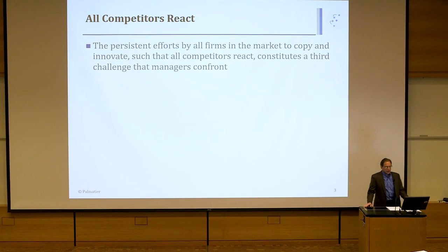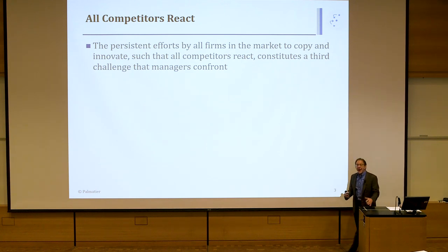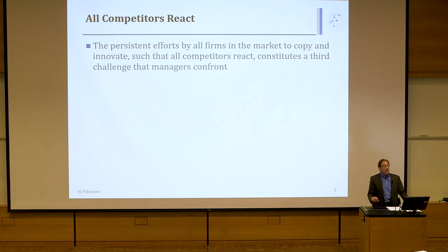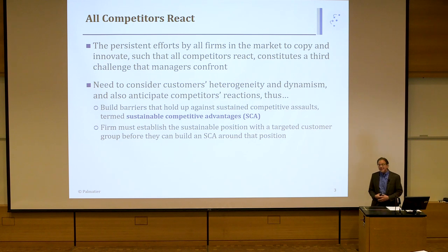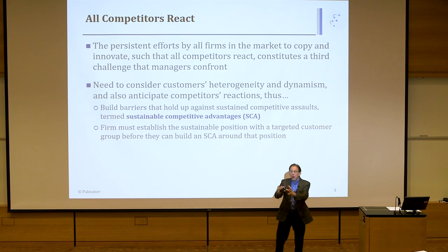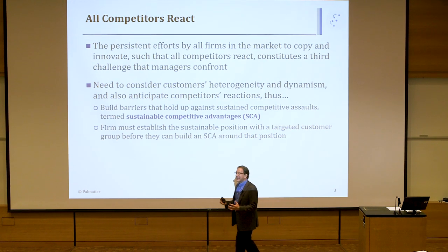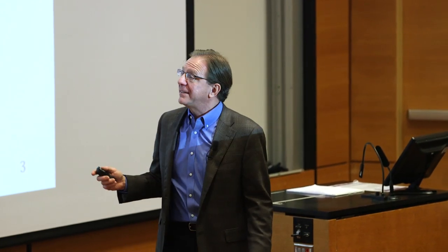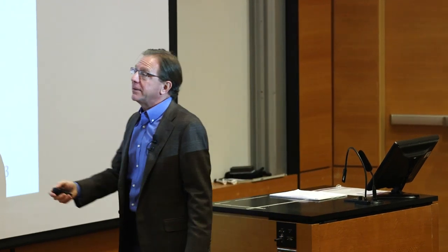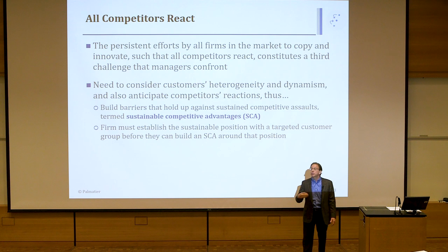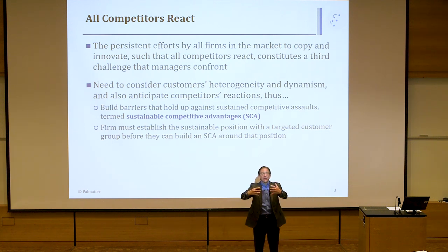All competitors react. All firms are out there putting in effort, time, resources, money, to copy and to innovate, to come out with a way to better service customers. Very often, those customers they go after will be the same customers you're trying to protect. This idea that they're all out there going after your customers is this third principle. Especially if you do the first two principles right — if you're very good at identifying your target segment, you know how your customers migrate in your portfolio, you're making lots of sales and profits — the bigger those sales and profits, the more the competitors are going to come after your business, because they see it as a good opportunity. As these competitors react, you need a way to protect your business. The way we're going to protect our business is by building sustainable competitive advantage — that's the term we use for the barriers or the moat around our business.